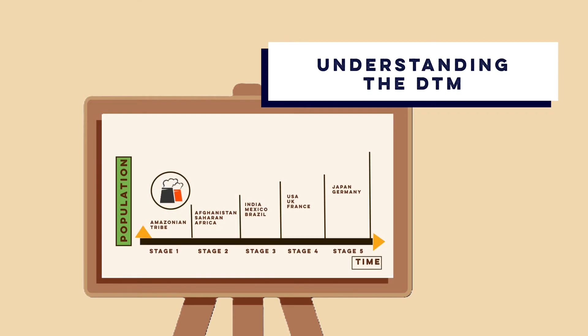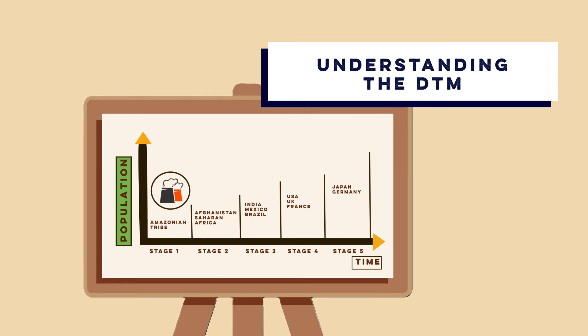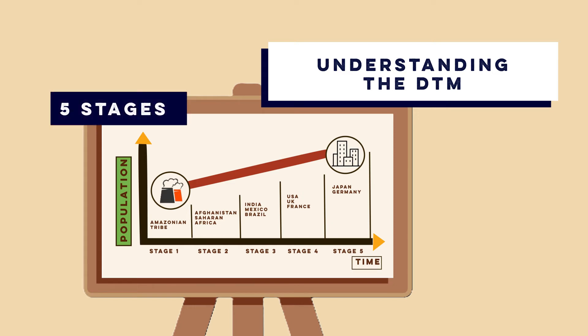Step 1: understanding the DTM. The DTM describes how populations grow and change in different countries as they move from pre-industrial societies to modern developed economies. It is based on historical trends from countries like the UK, but can be applied to other nations. The model consists of five stages, each reflecting different birth and death rates.